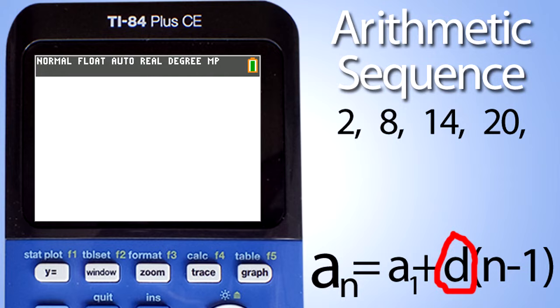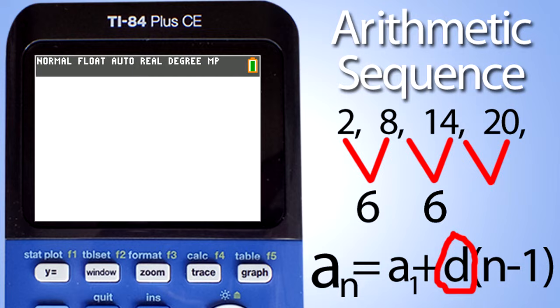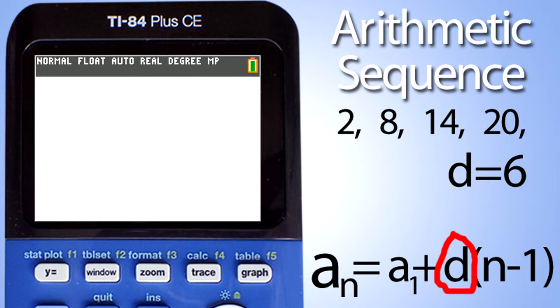So we need to calculate the common difference d. The difference between 2 and 8 is 6, because 8 minus 2 is 6. The difference between 8 and 14 is 6, because 14 minus 8 is 6. The difference between 14 and 20 is 6, because 20 minus 14 is 6. Thus, our common difference, d, is 6 for this arithmetic sequence of numbers.